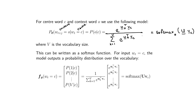If we've defined each of these probabilities in this way, we can substitute into the definition, and what we end up with is the dot product for each word in the vocabulary with the exponential for each, normalized by the sum over the entire vocabulary. This is exactly equal to the softmax, where U is a stacked version of all the context word embeddings.